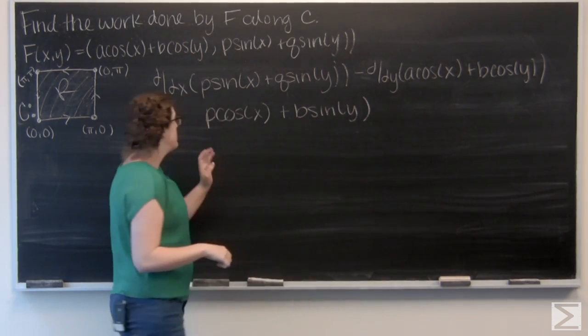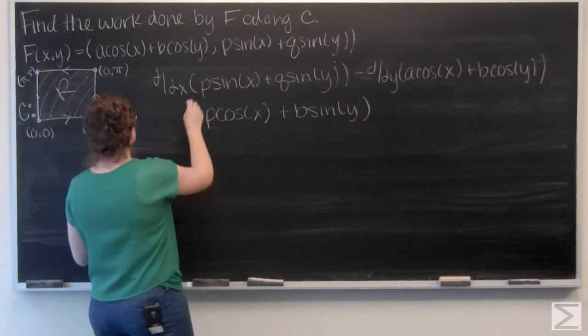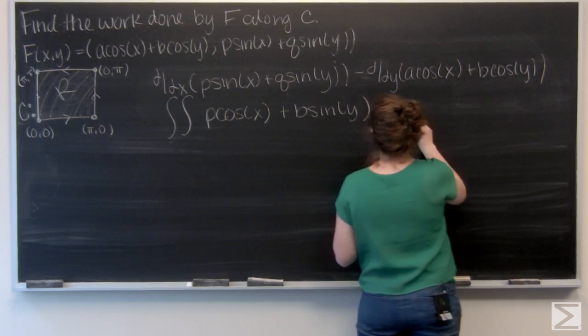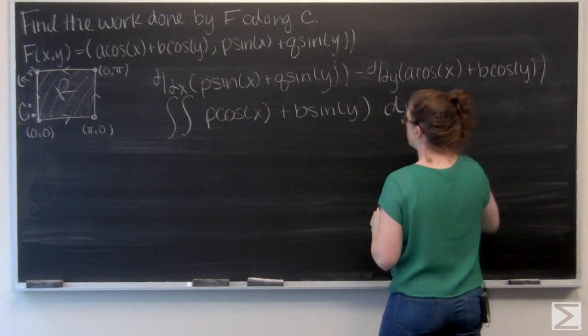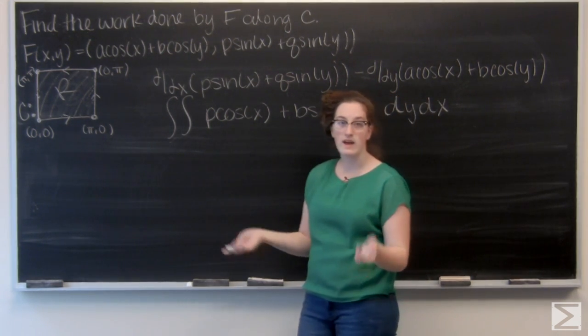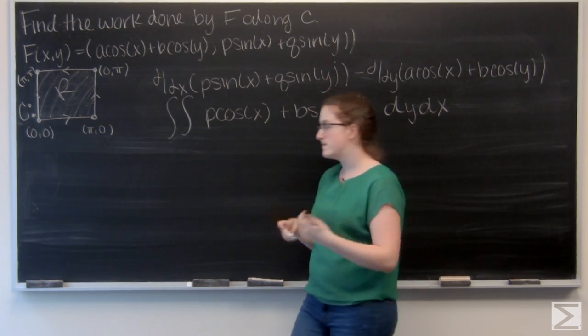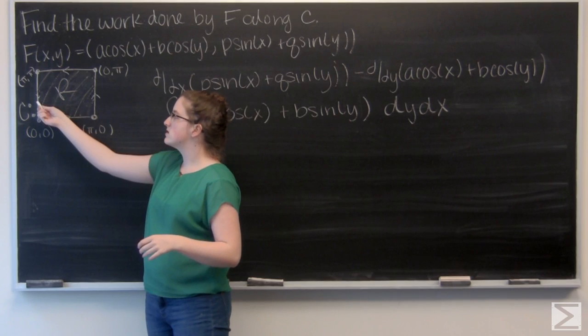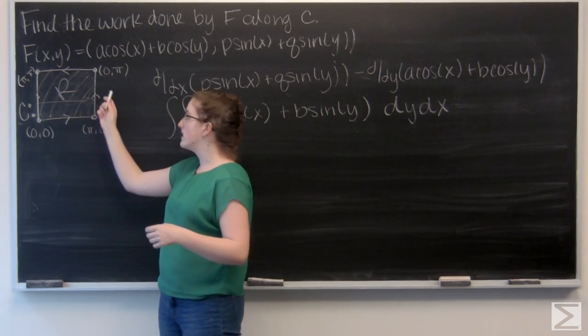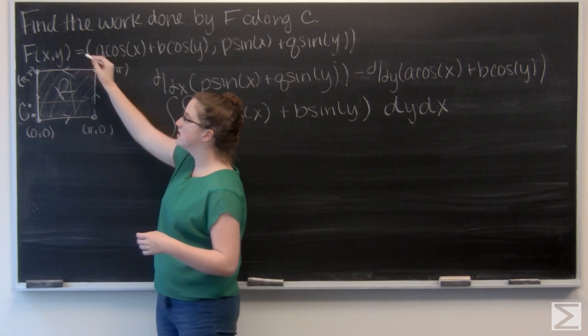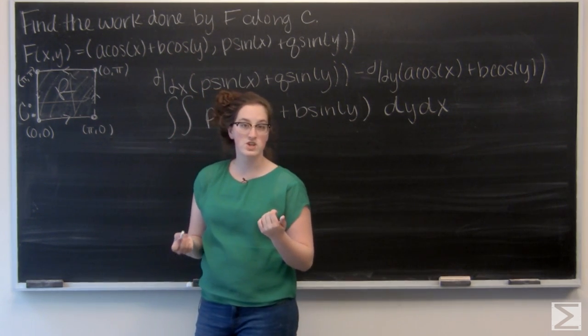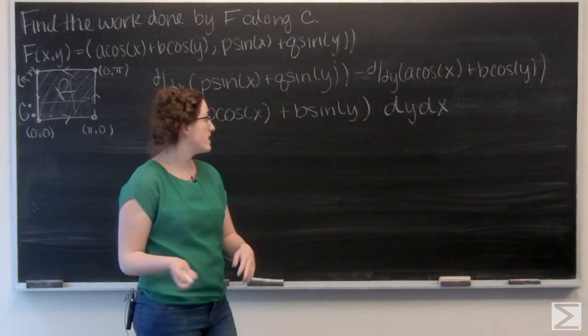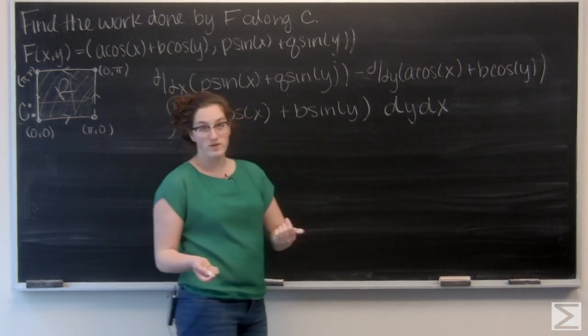Now I want to integrate this over that region R. And let's take a look at R so we can find some bounds of integration. Well, I've got a square and it looks like if I look across, x goes from 0 to π and likewise up for y. So my bounds of integration for both x and y are from 0 to π, so it doesn't matter which order I integrate in, but I'm just going to go ahead and do y first and then x.